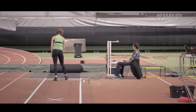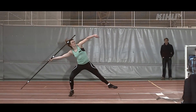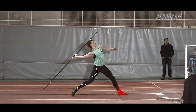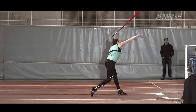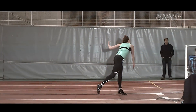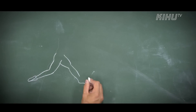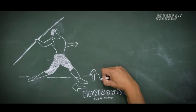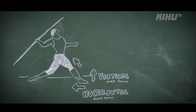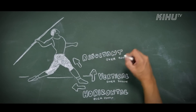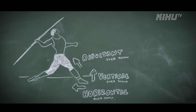To generate high release speed, the thrower must brake efficiently with his support leg and transfer the energy to the javelin. Ground reaction forces produced by the support leg are enormous. Top-level male thrower horizontal force is over 5000 N, and the vertical force of the support leg is easily over 7000 N. The calculated total resultant force is about 9000 N, which stands for over 900 kg of strain to the support leg.